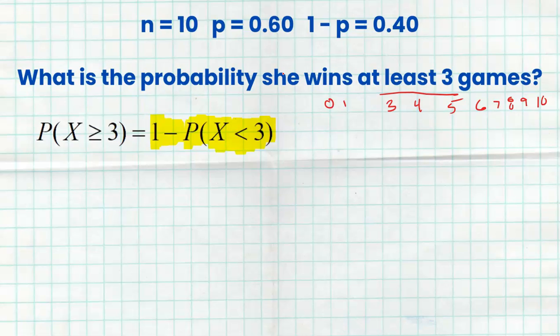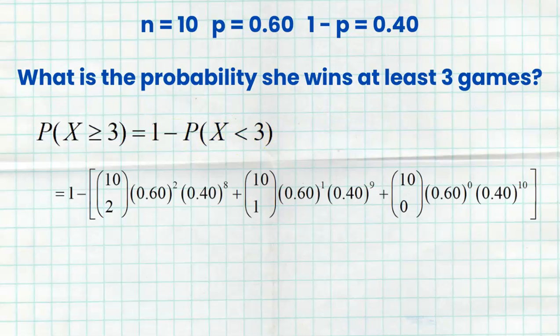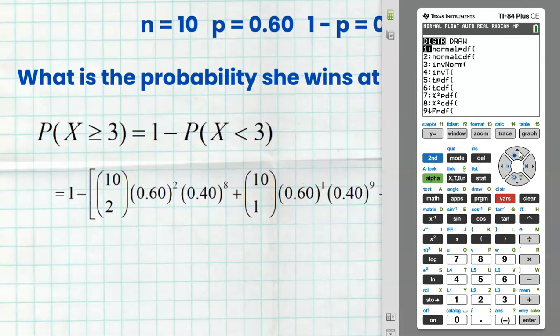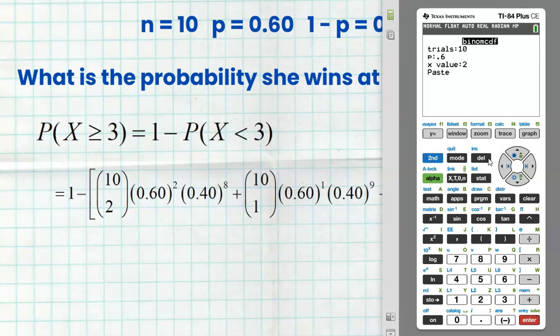Here's the list of all outcomes: 0, 1, 2, 3, 4, 5, 6, 7, 8, 9, 10. If I do the work for what I don't want — zero, one, and two — I then subtract that away from one and I'll be left with everything that I do want. Here's the work: 10 choose 2, 10 choose 1, 10 choose 0, and then one minus all of that. When I go to my calculator, I'm going to use binomCDF again because it calculates all of these much faster: 10 trials, probability of success 0.6. If I type in a two, it's going to do two, one, and zero.